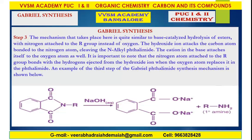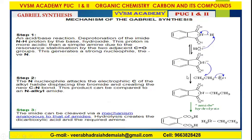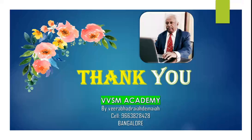In the third step of the Gabriel phthalimide synthesis mechanism, the N-alkyl phthalimide is treated with base, and the primary amine is obtained. This is the complete mechanism of Gabriel synthesis for your reference. Please go through the Gabriel phthalimide synthesis mechanism — you will get the primary amine. Thank you for listening.